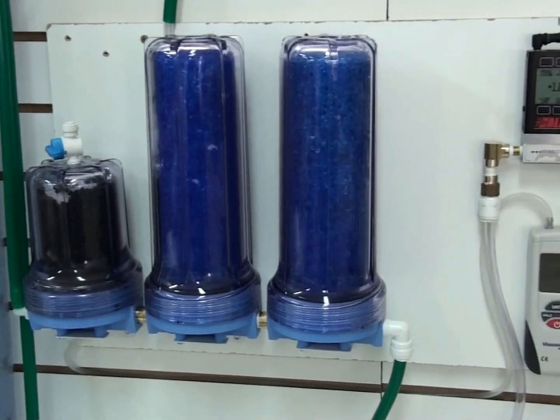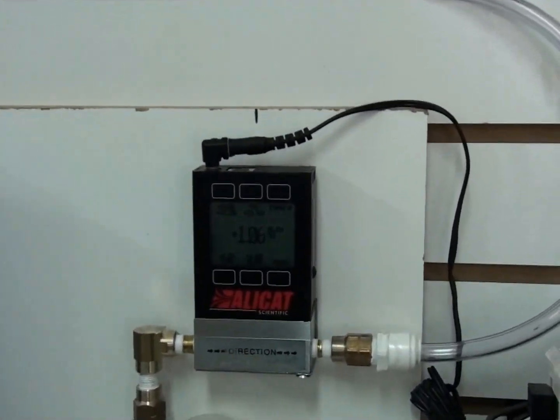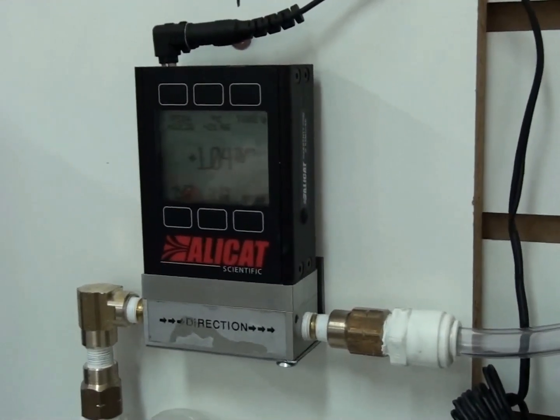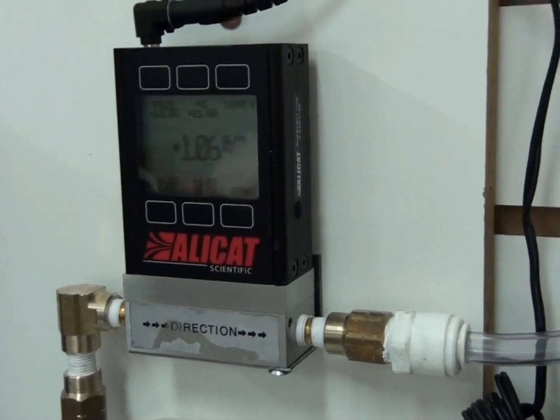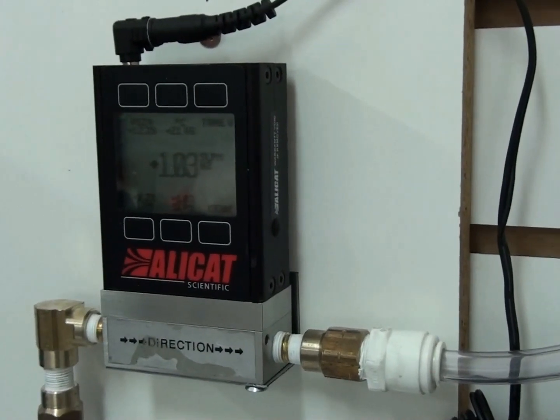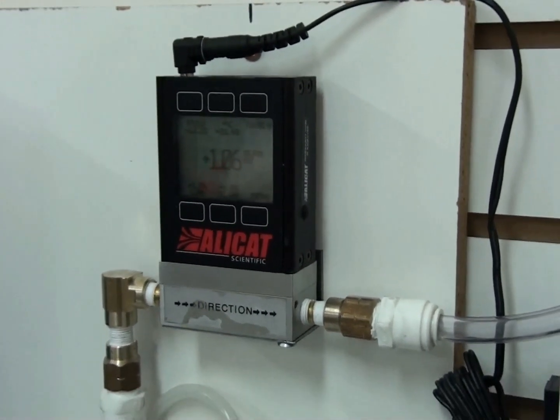From the dryer setup it enters the flow meter. This is an AlleyCat scientific flow meter and it measures the flow of hydrogen from the cell. Right now you can see it is flowing at a little over one liter a minute and that's SLPM, standard liters per minute.